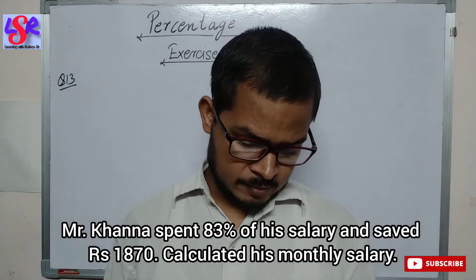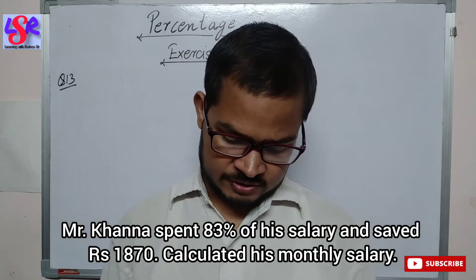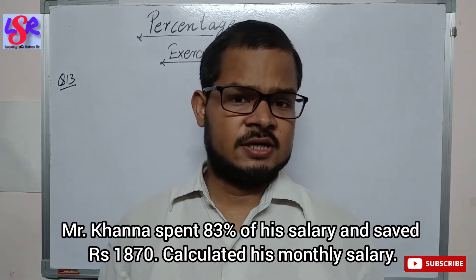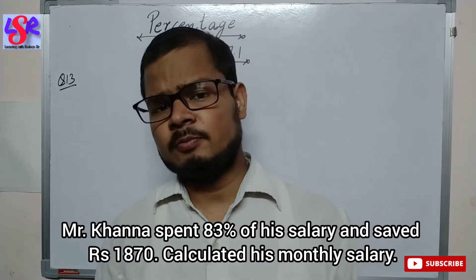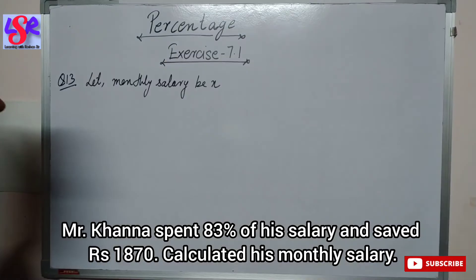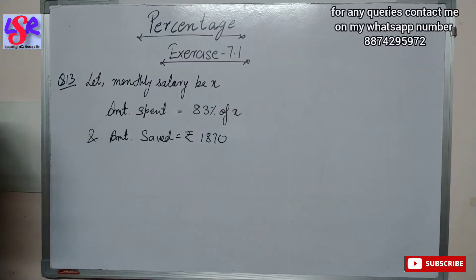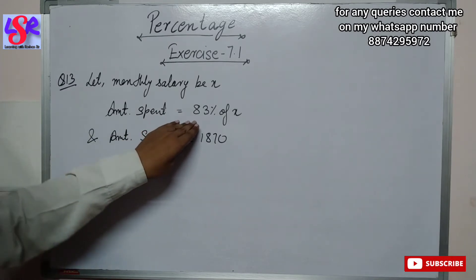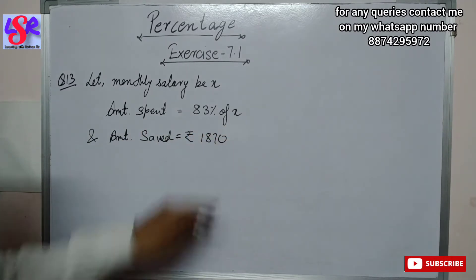Question number 13 states: Mr. Khannai spends 83% of his salary and saves 1870. We have to find the monthly salary of Mr. Khannai. Let monthly salary be x. Amount spent equals 83% of x, and amount saved equals 1870.